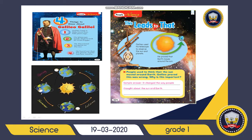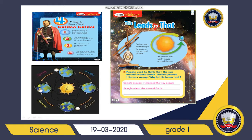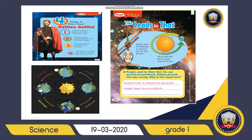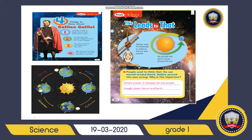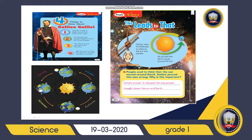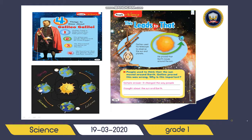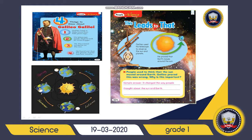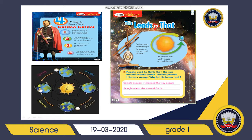Mr. Galileo used his telescope to observe the Sun and planets. He proved that Earth moves around the Sun. Now you understand that the Sun is not moving and the Earth moves around the Sun. Mr. Galileo is so famous in the world and he proved that Earth moves around the Sun.